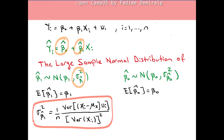This is the variance of the sampling distribution of β₁-hat. We will use the following estimator of the standard deviation of the sampling distribution, called the standard error of the OLS estimator β₁-hat. We will then have a discussion on hypothesis tests and confidence intervals to make inferences about the true population slope coefficient β₁. Let me also write the variance of the sampling distribution of β₀-hat.